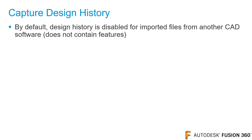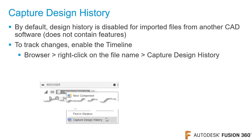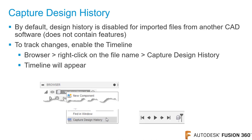Note that imported CAD files do not contain features and the file's design history is disabled. To capture design history and enable the timeline, go in the browser and right-click on the top-level file name. From the menu, click capture design history. The timeline will appear at the bottom of the canvas and you can add features as needed.